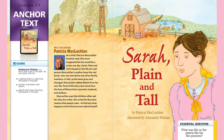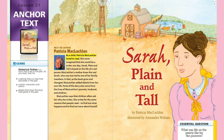Hi third graders, today's story is Sarah Plain and Tall by Patricia McLaughlin, illustrated by Alexandra Walner. The genre or type of story is historical fiction. Historical fiction is a story that is set in the past. As you read, look for a setting that is a real time and place in the past, realistic characters and events, and details that show the story took place in the past.